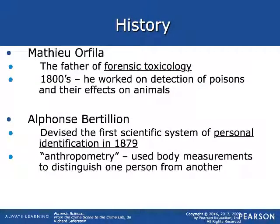As always in the first chapter, we get the history of what we're studying. Matthew Orfila is the father of forensic toxicology. Starting in the early 1800s, he worked on how poisons affect animals and how they can be detected — so forensic toxicology. He's the one who really got it all started.